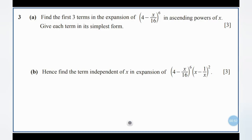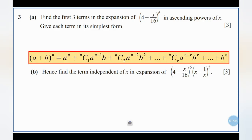Give each term in its simplest form. This question will give you three marks. For binomial expansion, you have to remember the formula: (a + b) raised to the power of n is equivalent to a to the power of n, plus nC1 times a to the power of (n minus 1) times b, plus nC2 times a to the power of (n minus 2) times b squared.